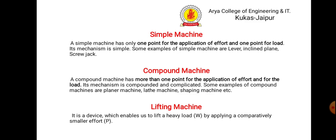First, simple machine. As we know, a machine is something in which whatever input we give is converted into output. Machines are categorized into three categories. The first one is a simple machine, which has only one point of application of effort and one point of load.